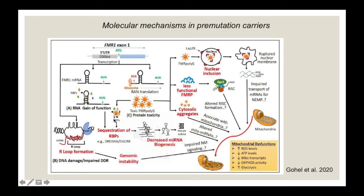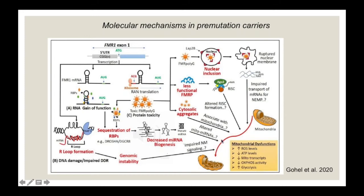For example, the sequestered proteins include DGCR8, which forms a complex with Drosha and is important for microRNA biogenesis. As a result, there is less production of mature microRNA because the DGCR8–Drosha complex is sequestered. This decrease in microRNA includes mito-microRNAs that are involved in mitochondrial functions — one possible explanation for the mitochondrial dysfunction observed in cells. Additionally, DNA damage can occur during transcription because FMR1 mRNA CGG repeats can form R-loops — mRNA–DNA hybrids that cause genomic instability.